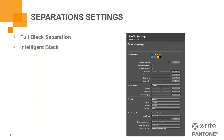Then there's the option for intelligent black. Essentially, this setting protects the gamut of the printer. When enabled, intelligent black may override the specified black curve to ensure availability of black to areas that need it when doing the color separation. While this can be turned off, we recommend keeping it enabled.